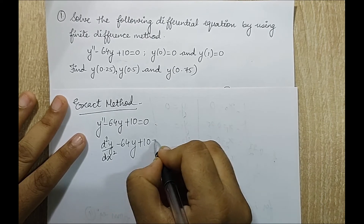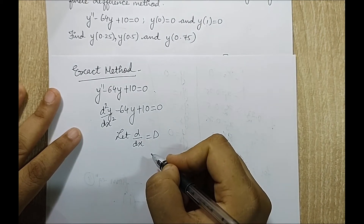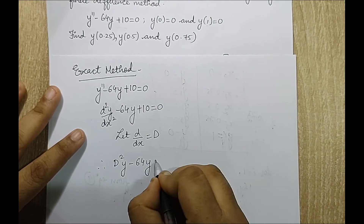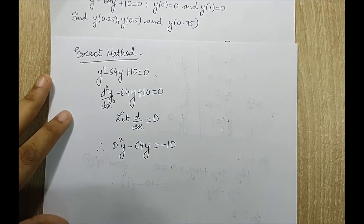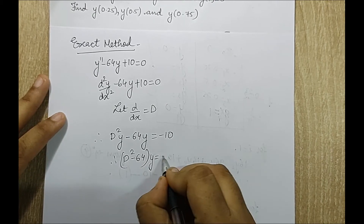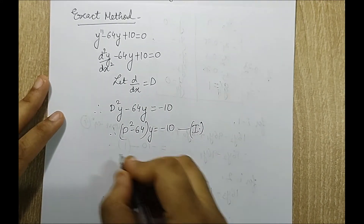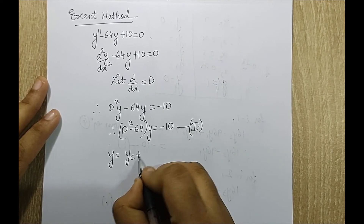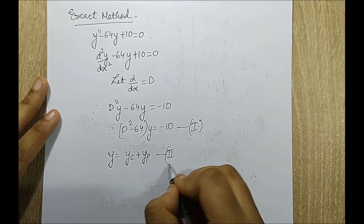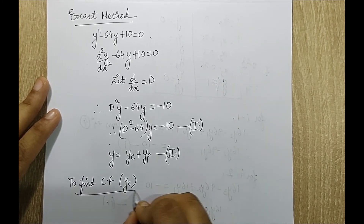Let D denote d/dx (the operator for the derivative). Writing with operator notation: D²y minus 64y equals minus 10. Taking y common: (D² minus 64)y equals minus 10. I mark this as equation 1. The solution will be in the form y equals yc plus yp — complementary function plus particular integral. I mark this as equation 2.